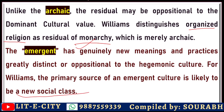For example, earlier the dominant values were those nourished and supported by the aristocratic class. But in the last phase of the 19th century and the beginning of the 20th century, when the middle class became a power, a new type of value system came into being. Earlier it was emergent, and then it became dominant.